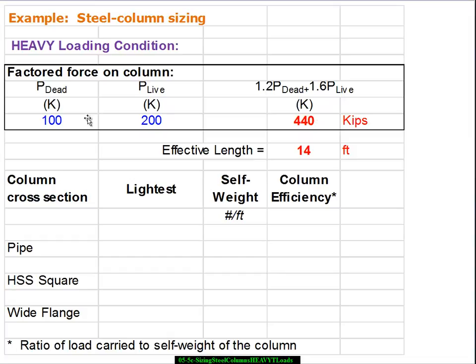This is 1.2 times 100 plus 1.6 times 200, and we're going to take an effective length of 14 feet, which could be a not uncommon floor to floor dimension in a multi-story building.